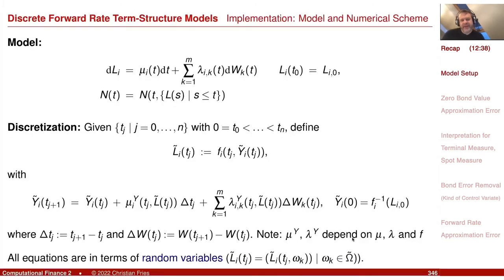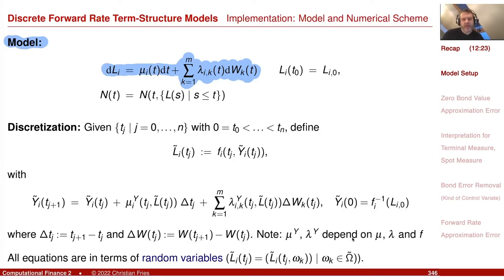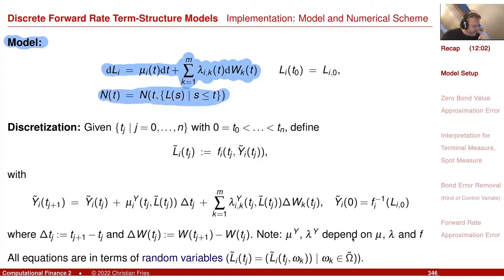So that actually was our model. We had an Itô stochastic process for individual forward rates driven by multiple Brownian motions — our factors with functions in front of our factor loadings. The functions could also depend on L. Then we had a local volatility function, and we introduced different numeraires also being functions of L. Our way to discretize this was the Euler scheme.